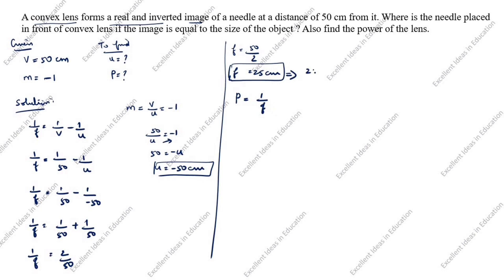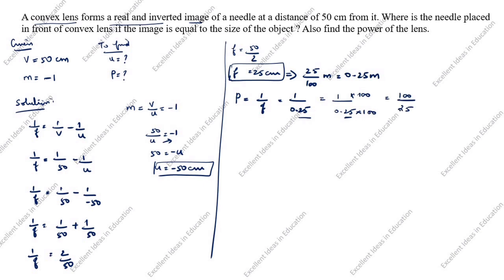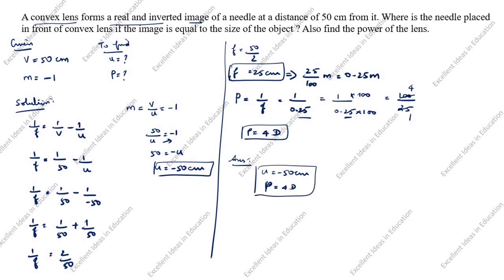Converting f to meters: 25 divided by 100 equals 0.25 meters. So P equals 1 by 0.25. Since the denominator is a decimal, we convert: 1 divided by 0.25 equals 100 by 25, which equals 4. Therefore P equals 4 diopters. The final answers are: u equals minus 50 centimeters and P equals 4 D. Thanks for watching this video.